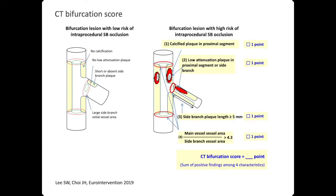We developed the C-divification score, which calculates the risk of side-branch occlusion based on the presence of calcified plaque, low-attenuation plaque, the length of side-branch plaque, and the ratio of main vessel to side-branch vessel area. The sum of these four points constitutes the C-divification score.